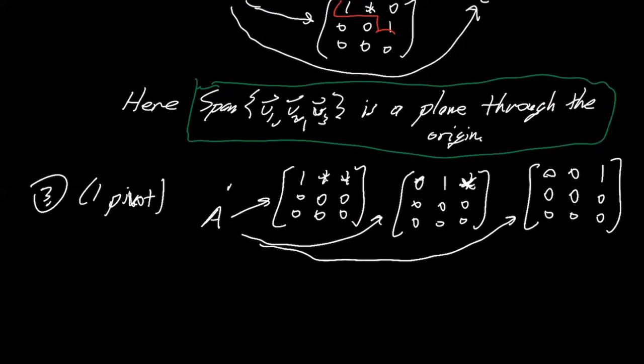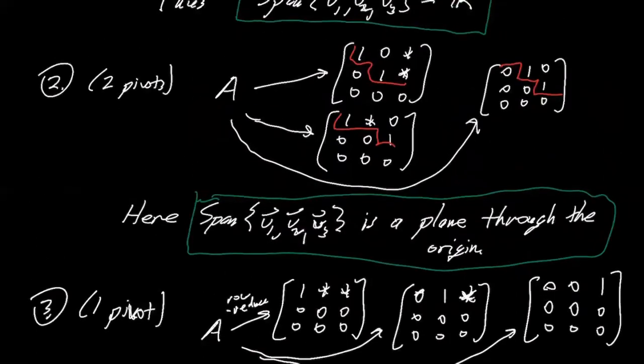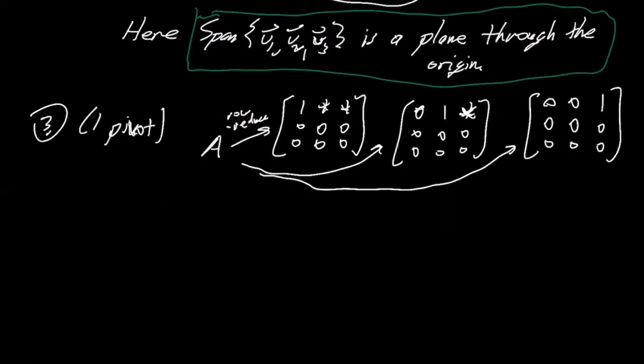So these all, these are possibilities that you could get by row reducing. And now if everything's a multiple of one vector, I think this should be similar to what we had in 2D, the 2D case where I went through a little more carefully, but the span's going to be a line through the origin.